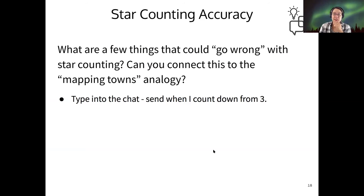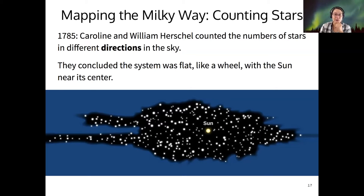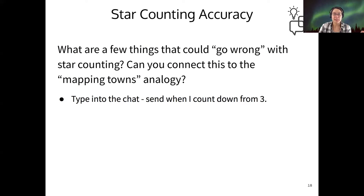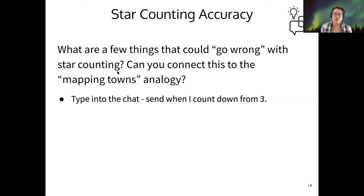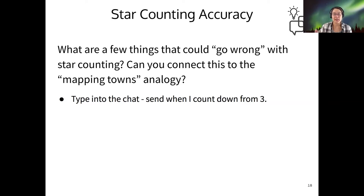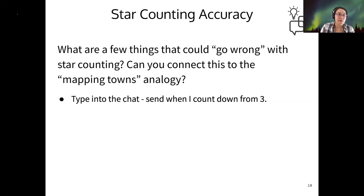This is a very different picture — it doesn't look like a spiral galaxy at all. So what things could go wrong with this idea of star counting? Can you connect some of those problems to the mapping-towns analogy — standing on a hilltop at night and trying to figure out where the towns are by looking at their lights? Go ahead and type into the chat.